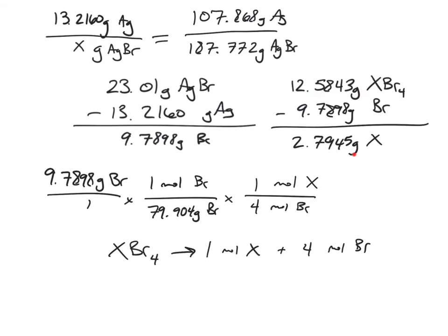Then finally, I'll take the grams of X that are in the sample divided by the moles of X that are in the sample to get the molar mass. The answer here is 0.03063. Finally, I'm going to take 2.7945 grams of X and divide by 0.03063 moles of X to find my molar mass. And that molar mass is equal to 91.23 grams per mole.